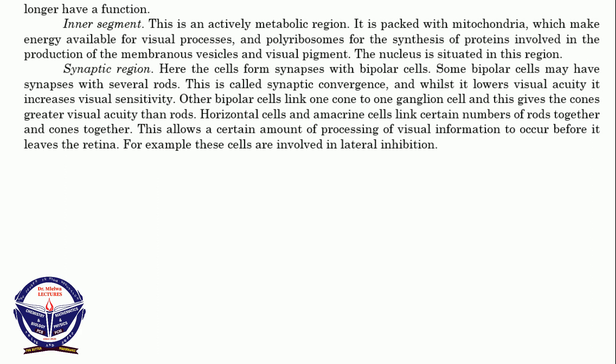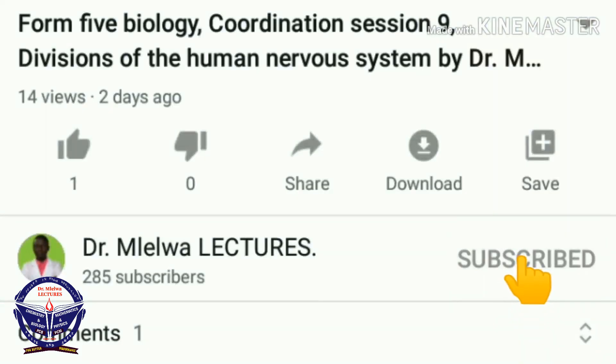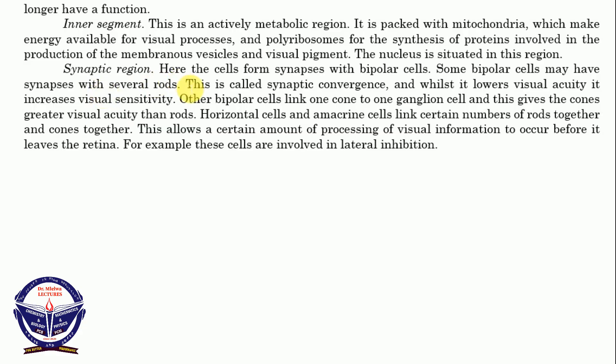The last segment of the photoreceptor layer is the synaptic region. Here the cells form synapses with the bipolar neurons. Some bipolar cells may have synapses with several rod cells — this is called synaptic convergence, as discussed earlier in the properties of receptors. Here several rods are connected to only a single bipolar neuron. This is what we call convergence. It increases the sensitivity of the rods, but it lowers the visual acuity. So convergence lowers acuity but increases sensitivity.